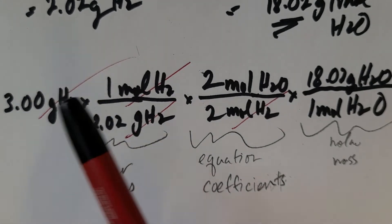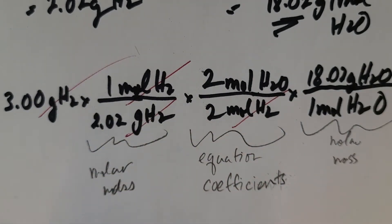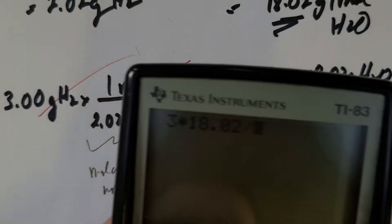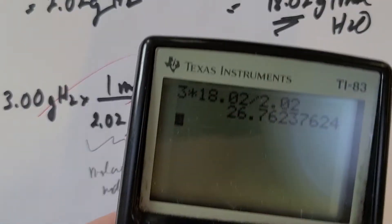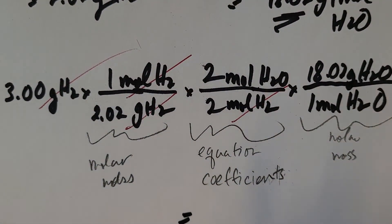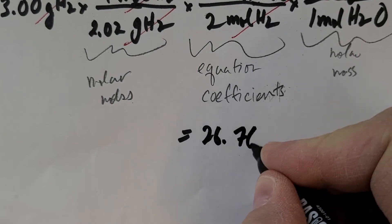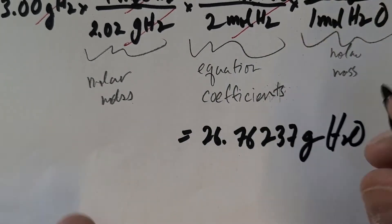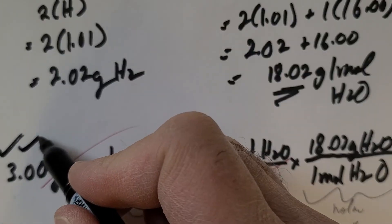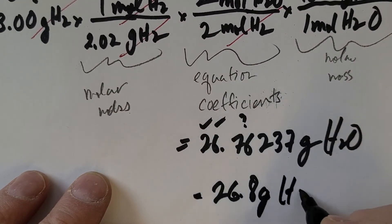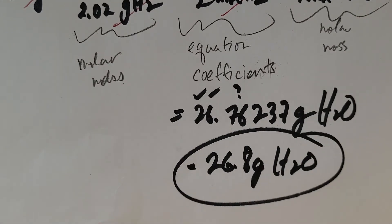Okay. And of course, I'm calculating this out. Three times two times 18 divided by two times two. So what we get there is, now of course, these are going to cancel. So it's really just three times 18.02 divided by 2.02. And I get 26. Let's move this paper up here. So 26.72237 grams of H2O. But of course, I need to get SIGGY with it here. I have one, two, three sig figs. One, two, three sig figs. This is going to round off to be 26.8 grams of H2O. So that is how we do a stoichiometry calculation.